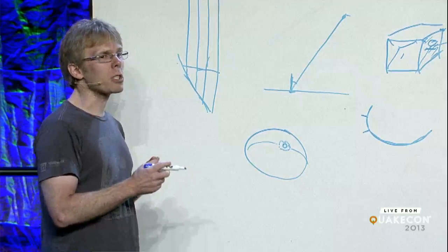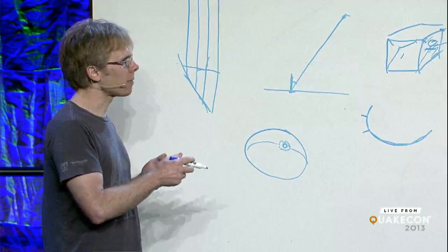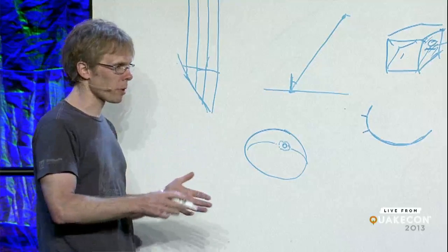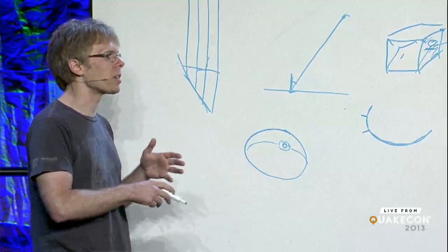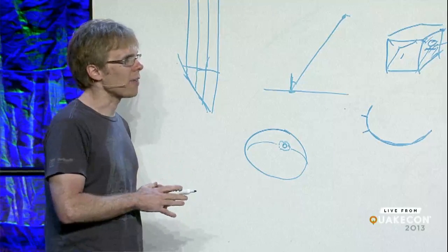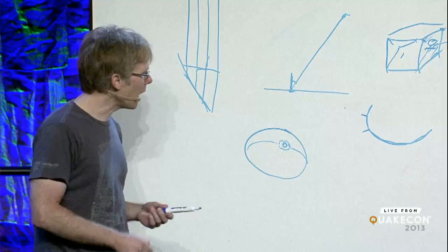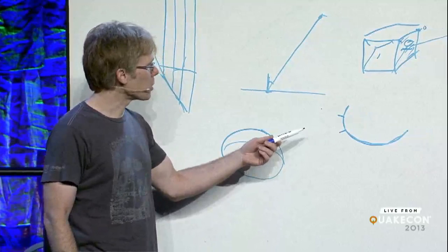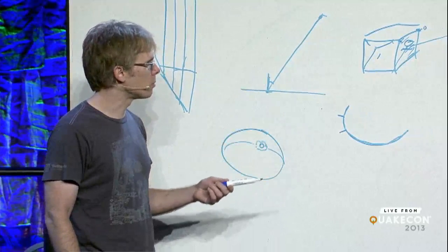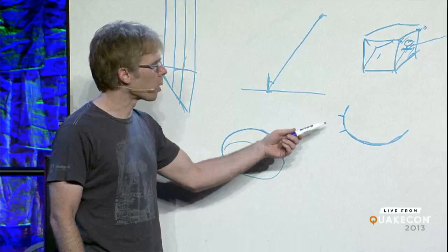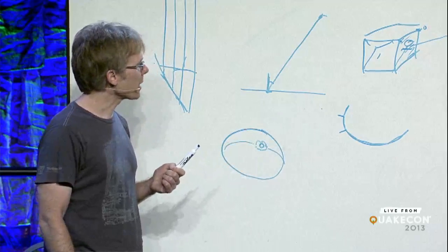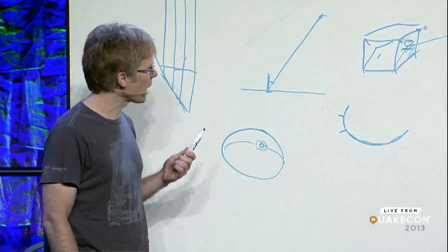And while Quake didn't have any specular highlights, it did have, you had samples every 16 pixels in the light maps that we interpolated across those and that gave us the look that was very important for it. And we didn't get to actually, it was only all the way up to Doom 3 where we would start doing per-pixel operations like this to get the much better calculations.